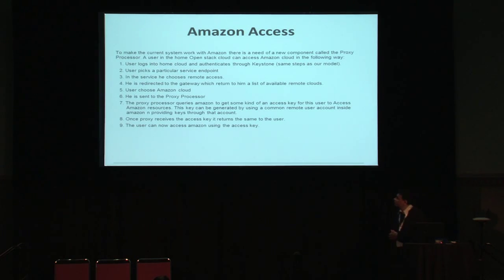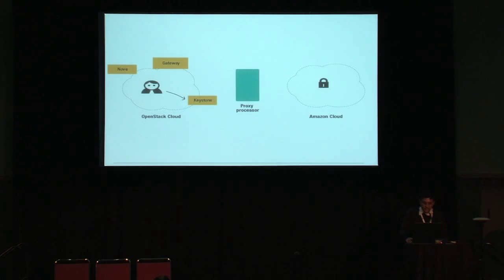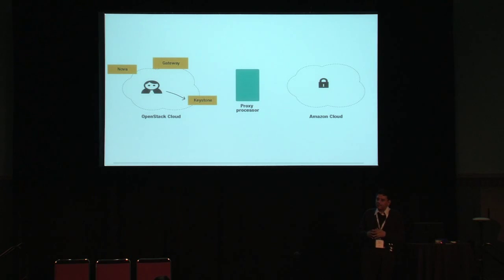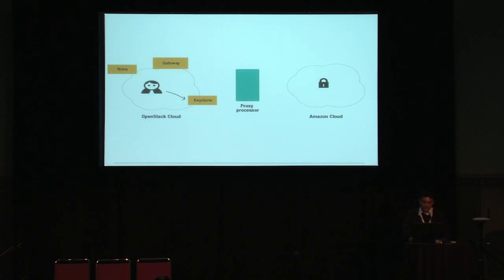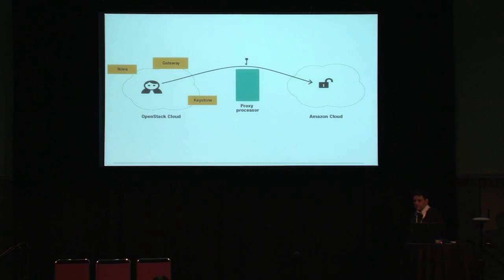Now, how we can extend this concept to support Amazon. Since Amazon does not use tokens but uses access keys, we need a proxy processor which will return the access keys to the user. The user requests Keystone and gets access to the gateway. Once the gateway is accessed, it talks to the proxy processor which talks to Amazon and returns access keys to the user. Once the user has access keys, they can access things in the Amazon cloud.